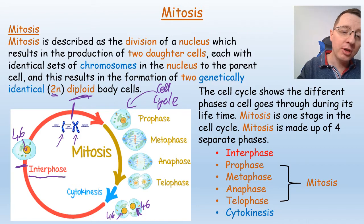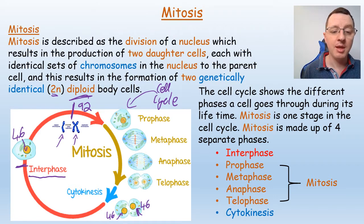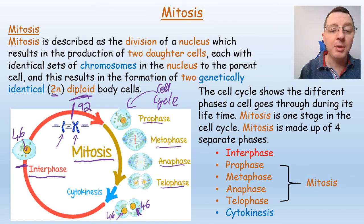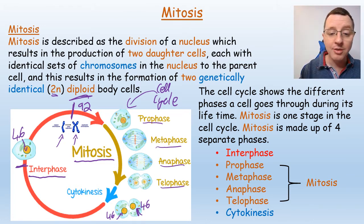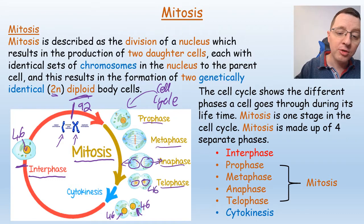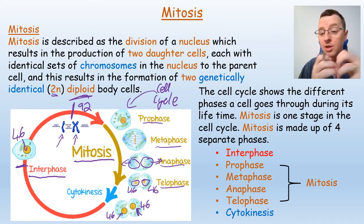So instead of having 46 chromosomes in the nucleus we now have 92 chromosomes. After that point the cell will begin to go through mitosis, which is split up into four phases: prophase, metaphase, anaphase, and telophase. In each of these phases the 92 chromosomes are being separated and sent to opposite sides of the cell, and eventually two nuclei will form, each with 46 chromosomes, through the nuclear division known as mitosis.